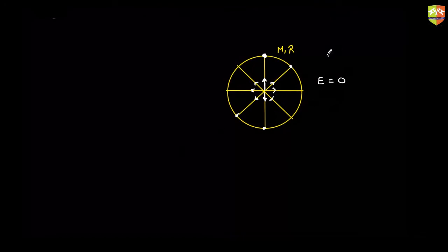By symmetry, if you place a mass at the center of the ring, it will not experience any gravitational force because the field is zero — so mass times field, which is force, is also zero.